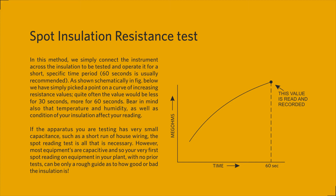Spot insulation resistance test: In this method, we simply connect the instrument across the insulation to be tested and operate it for a short, specific time period — 60 seconds is usually recommended. We have simply picked a point on a curve of increasing resistance values. Quite often the value would be less for 30 seconds, more for 60 seconds. Bear in mind that temperature, humidity, and condition of your insulation affect your reading. If the apparatus has very small capacitance, such as a short run of house wiring, the spot reading test is all that is necessary. However, most equipment is capacitive, so your very first spot reading with no prior tests can be only a rough guide as to how good or bad the insulation is.